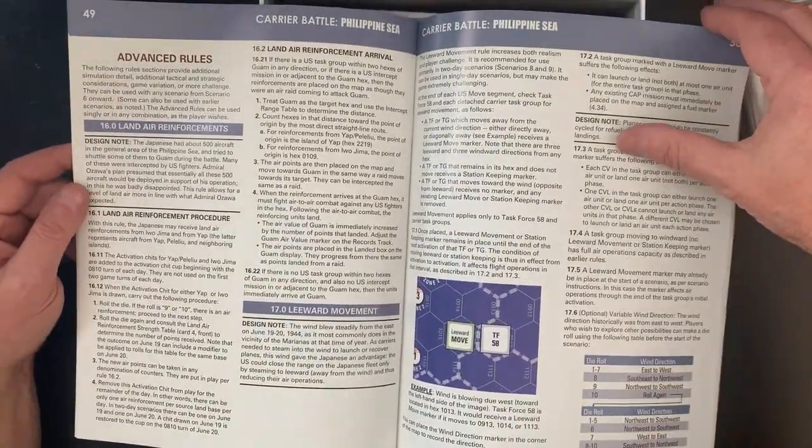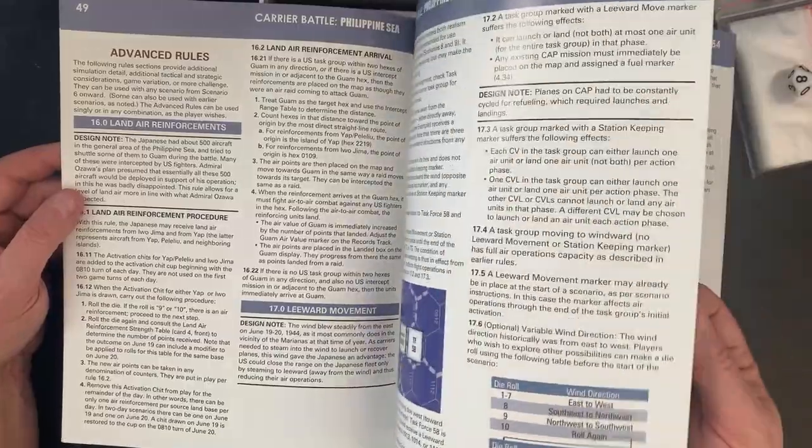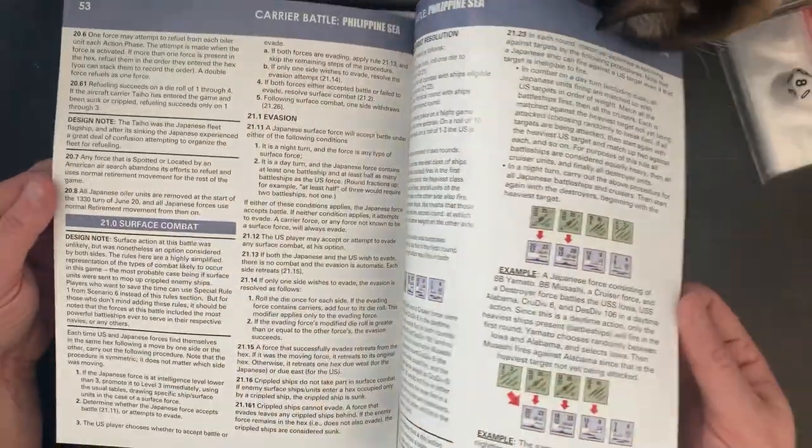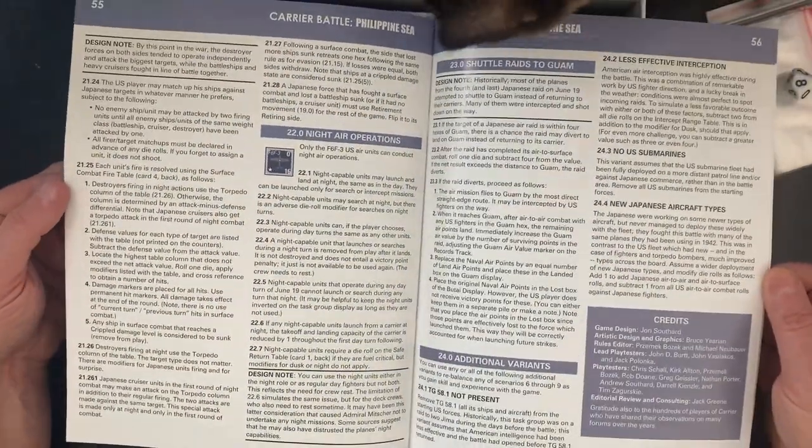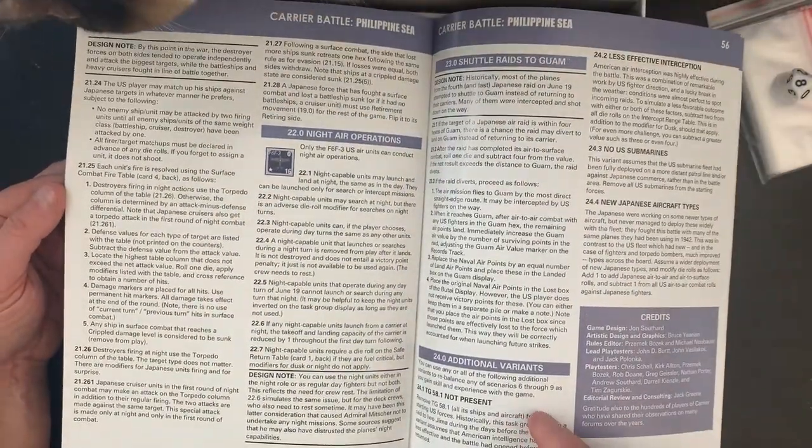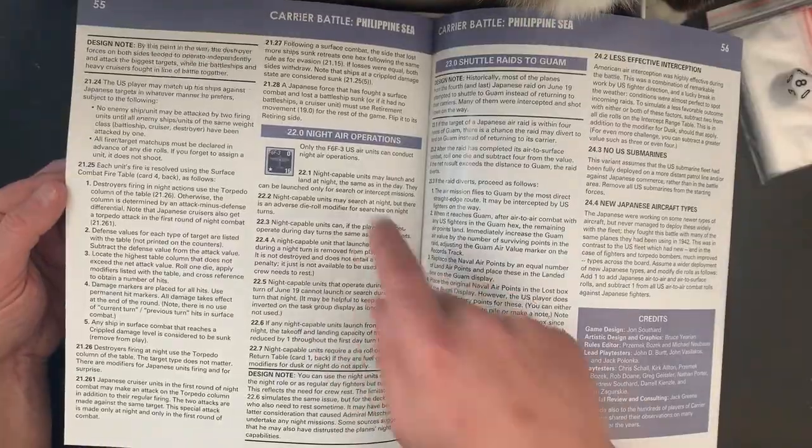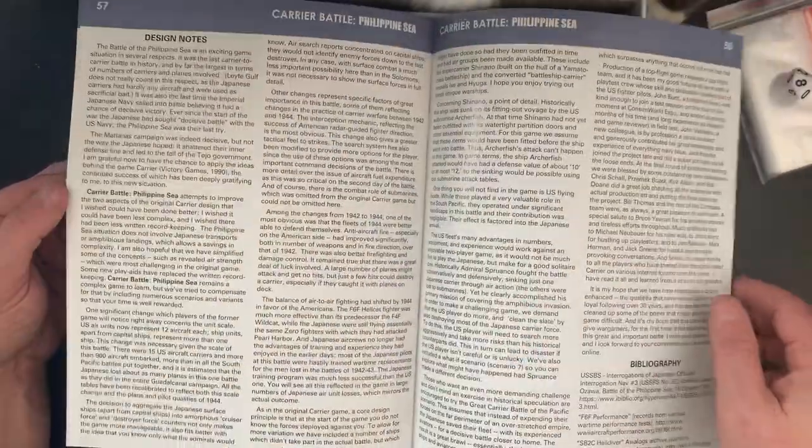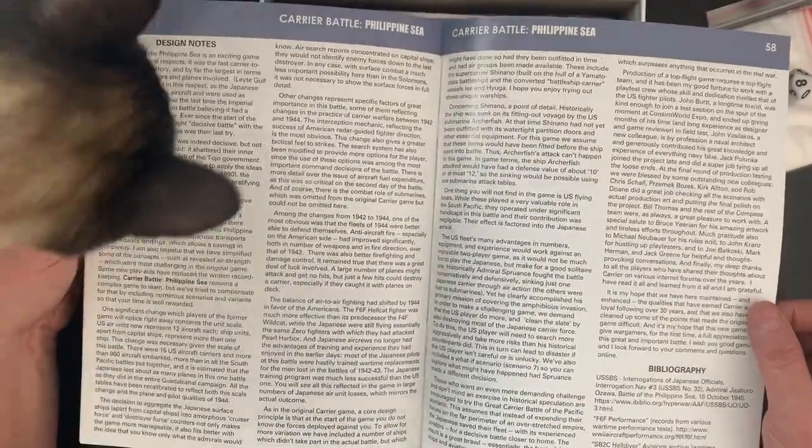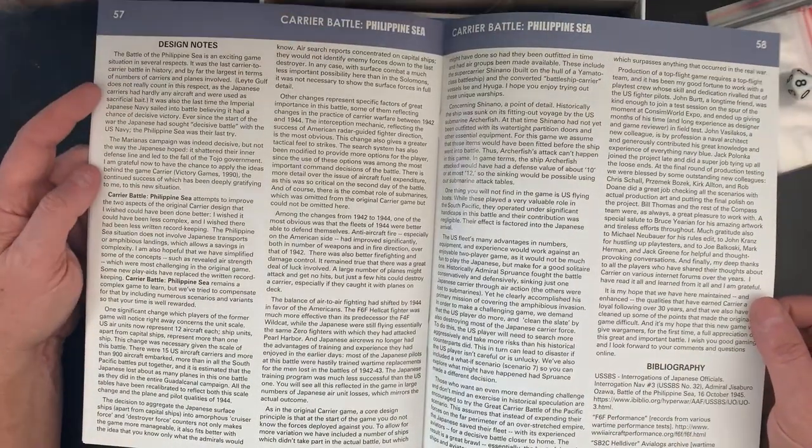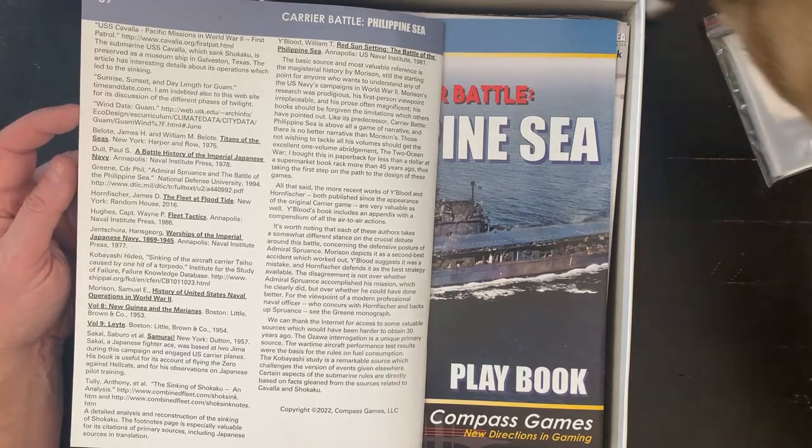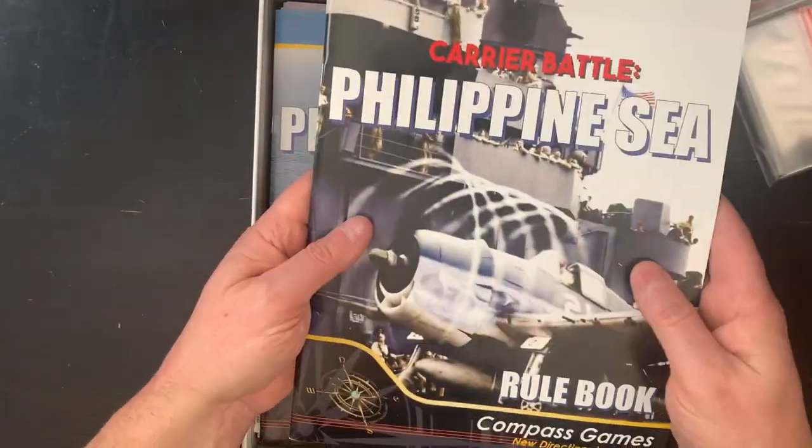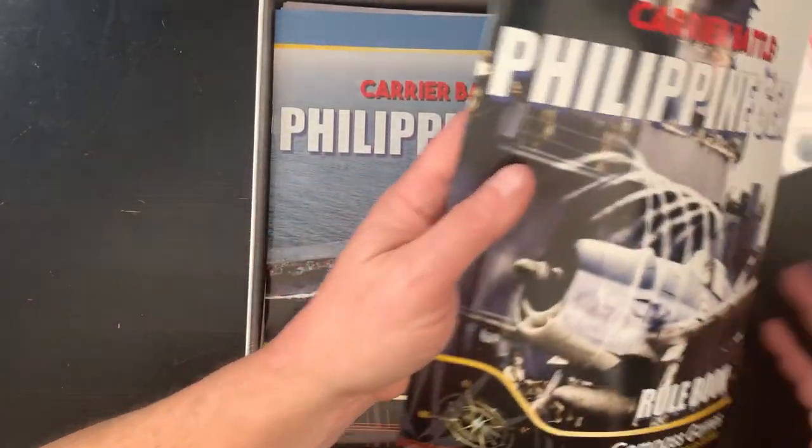Then we get into some advanced rules. Let's see if there's any optional. Hi-cap, some variants. Night operations. This looks like it's pretty in-depth. Awesome, two more pages of designer notes, a third page. I'm digging this, this is the stuff I love. Scooch it, little girl.